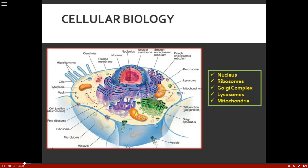DNA never comes out of the nucleus — it uses RNA to do its work. Most of the processing of RNA actually occurs in the nucleolus. Ribosomes are RNA protein complexes, and their main function is to provide sites for cellular protein synthesis — very important.